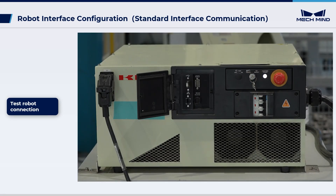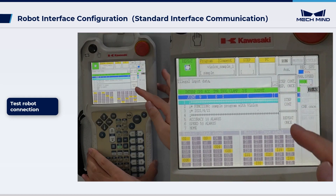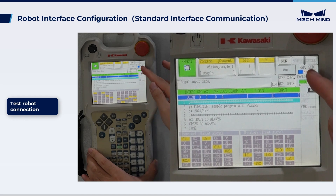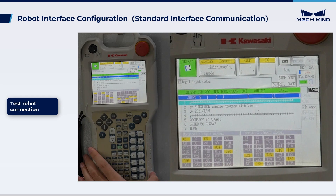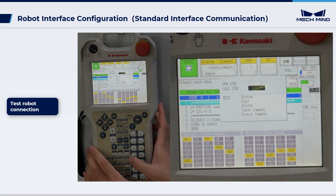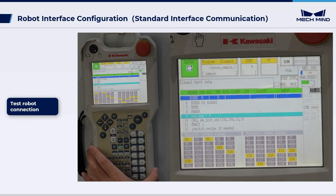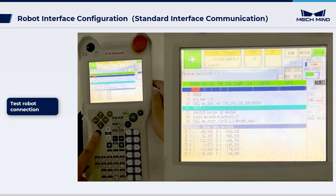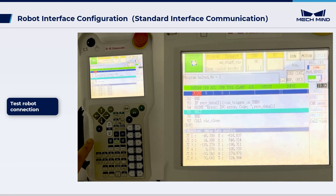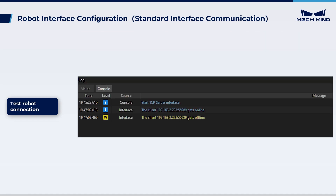Switch the robot to Repeat mode. Press the white button below AUX to change the drop-down options to Step Cont and Repeat Once. Press RPT SPD to adjust the repeat speed to 10%. To skip Line 7 (which returns the robot to home position), change Step from 1 to 9 and press Enter. Hold the A key and press Motor on the teach pendant to light Motor, then hold A and press Cycle to light Cycle. If Run does not turn green, press Run/Hold while holding A. The console tab of MechVision Log Panel will print a log indicating the client is connected if the robot is connected successfully.